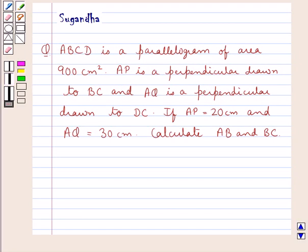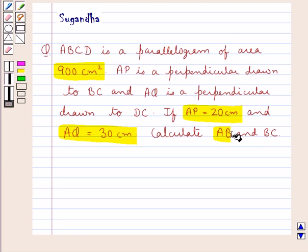Hello and welcome to the session. In this session we discuss the following question: ABCD is a parallelogram of area 900 cm². AP is a perpendicular drawn to BC and AQ is a perpendicular drawn to DC. If AP is equal to 20 cm and AQ is equal to 30 cm, calculate AB and BC.